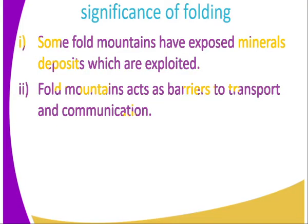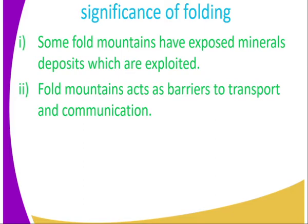The second significance: fold mountains act as barriers to transport and communication. How does this take place? For example, where we have depressions — we have already talked about the features associated with folding, and depressions are one of them. From one mountain to the other, we have a very extensive area. So when it comes to constructing roads or installing electricity, it becomes a problem. That is the reason why fold mountains act as barriers to transport and communication.